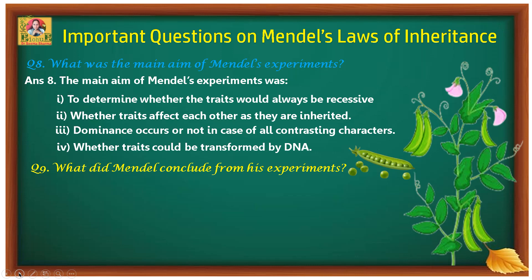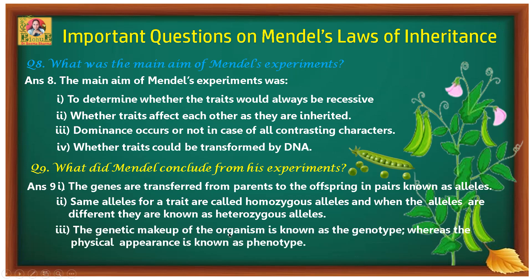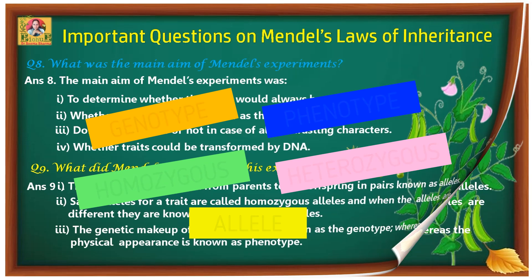Question nine: what did Mendel conclude from his experiments? Mendel's conclusions were: first, genes are transferred from parents to offspring in pairs known as alleles; second, same alleles for a trait are called homozygous alleles, and when the alleles are different they are known as heterozygous alleles; third, the genetic makeup of an organism is known as its genotype, whereas the physical appearance is known as its phenotype. All these terms — genotype, phenotype, homozygous, heterozygous, and alleles — were coined by Mendel.